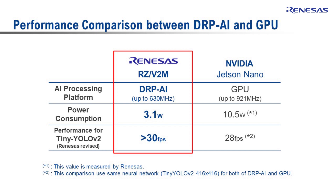This table shows the overall performance comparison between DRP-AI and the GPU. In the second demo, power consumption for RZV2M with DRP-AI is 3.1 watts and AI performance is over 30 frames per second, whereas the Jetson Nano is consuming over 10 watts and delivers AI performance of less than 30 frames per second.